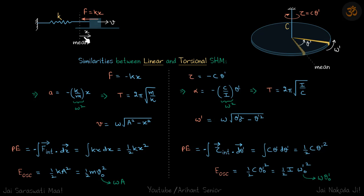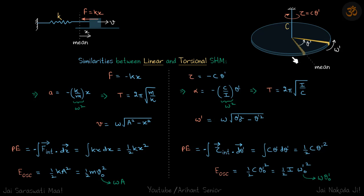In linear SHM the body moves by distance x. In torsional SHM, let's say this is the mean position and the body is rotated by an angle theta-dash, so theta-dash is analogous to x. The restoring force kx is analogous to restoring torque c·theta-dash, where c is a constant. If the body has velocity v, the analogous quantity here is the angular velocity of the body, omega-dash.